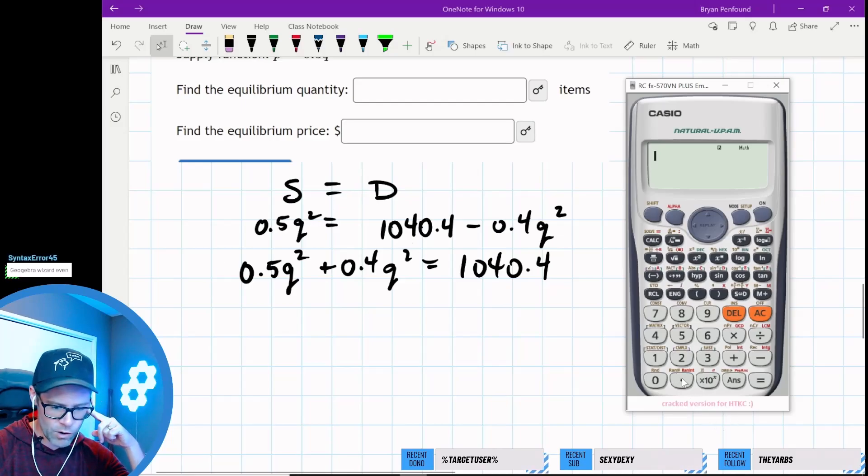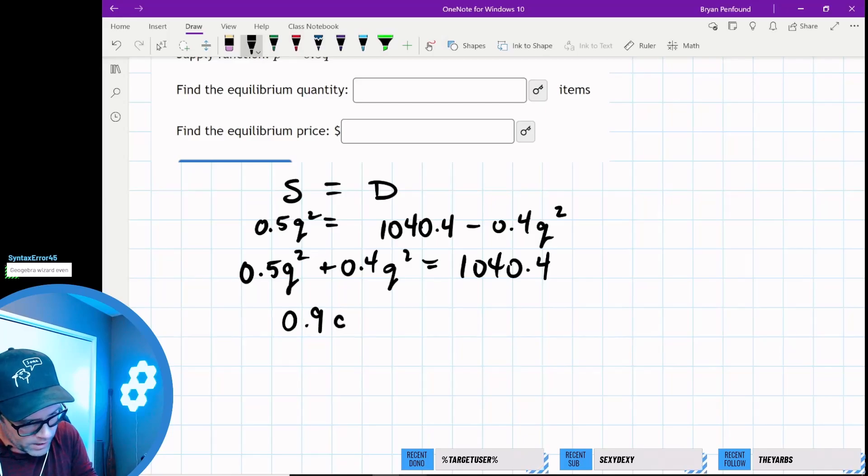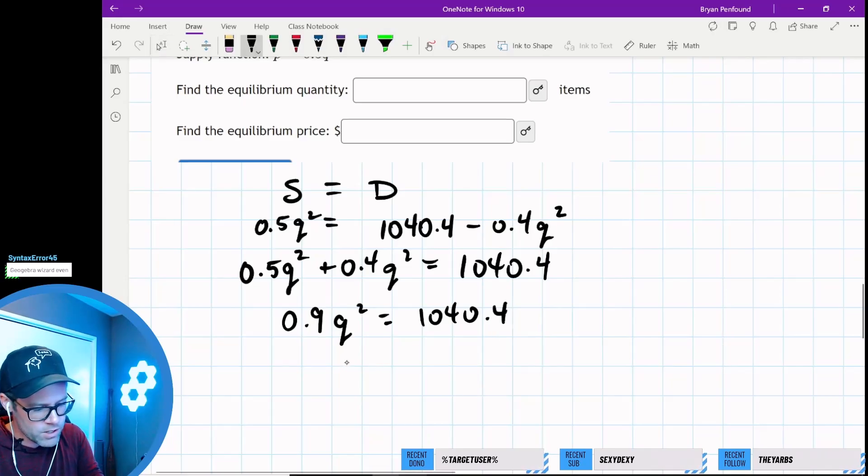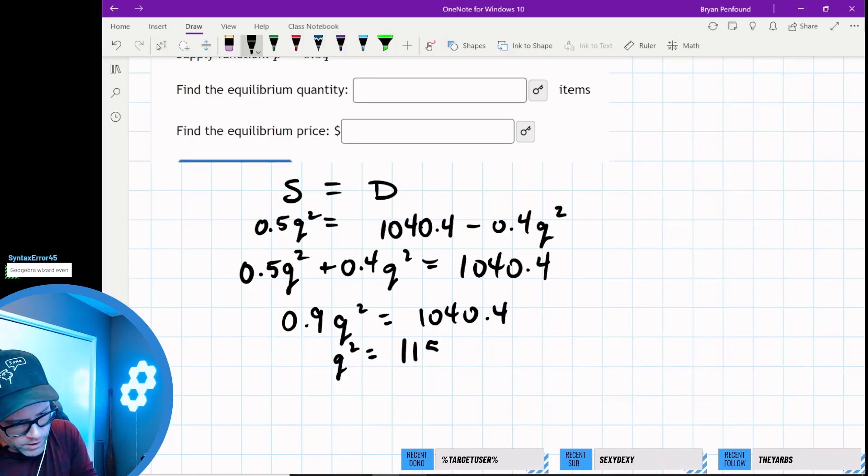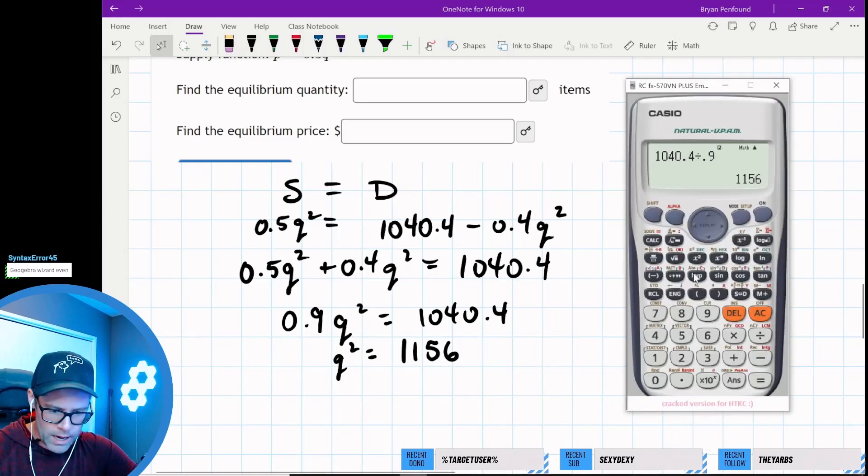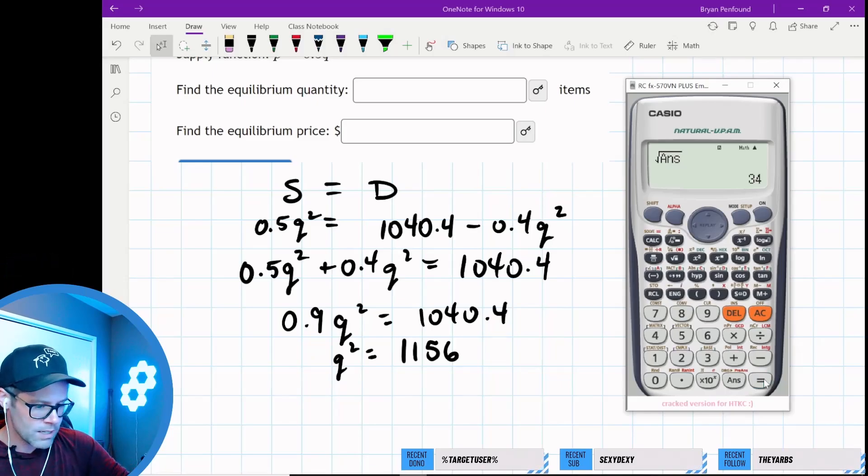I'm going to group negative 0.4 with 0.5—that gives us 0.9. So 0.9q squared equals 1040.4. Divide both sides by 0.9: 1040.4 divided by 0.9 is 1156. That's q squared. Apply the square root and we get 34.